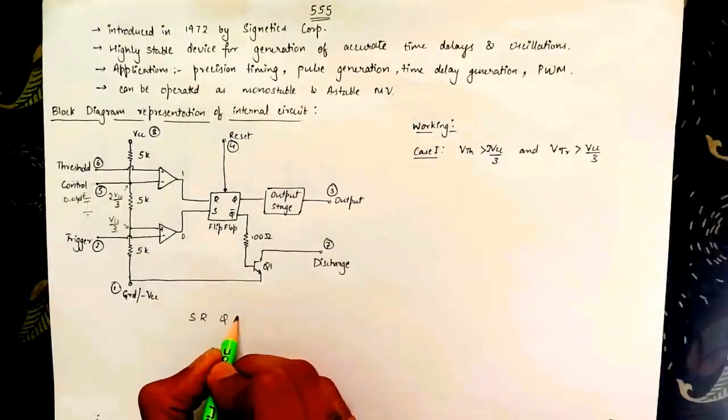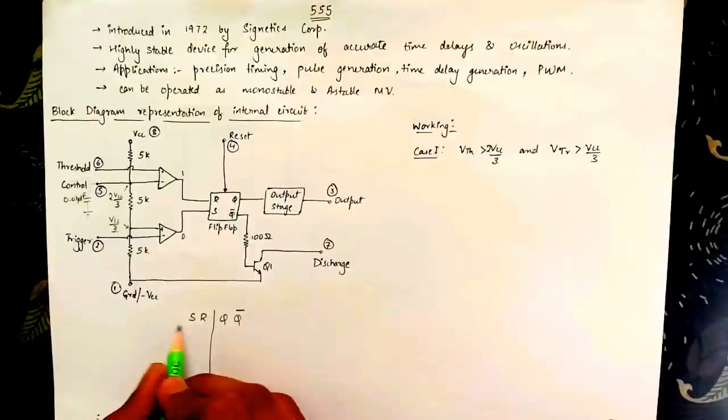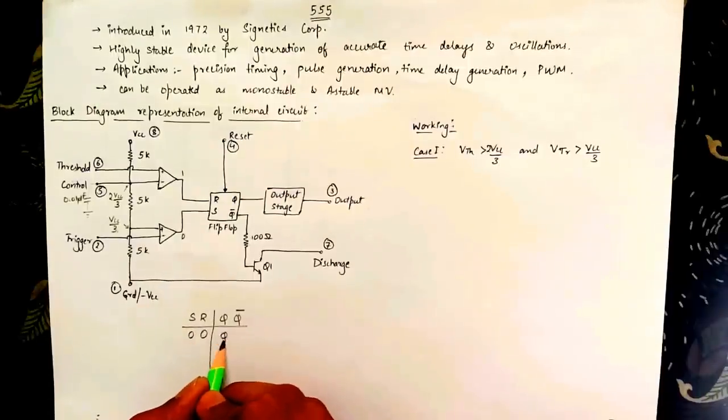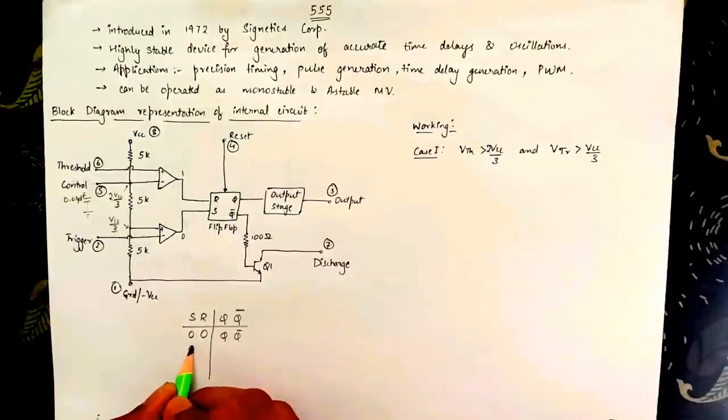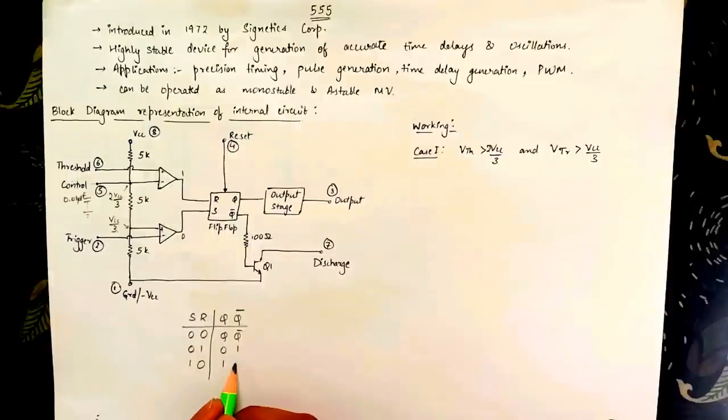Before moving on further first let's look at the truth table of SR flip flop. When S and R both the inputs are 0 the output remains same as the previous state. When the reset is 1 the output is reset. When the set is 1 the output is set. When both the inputs are 1 then it reaches into a not defined state.